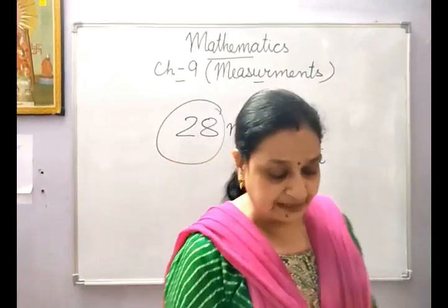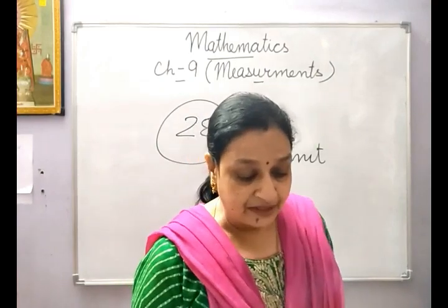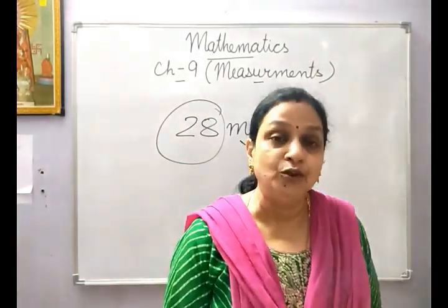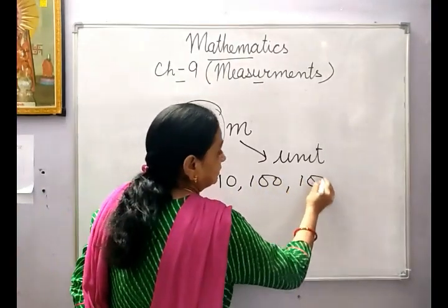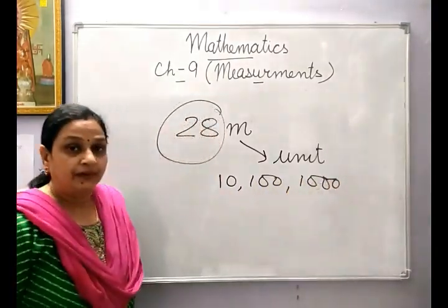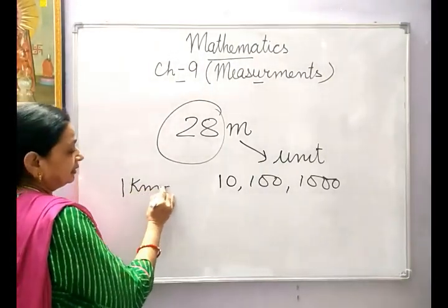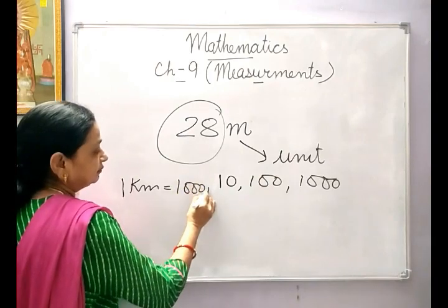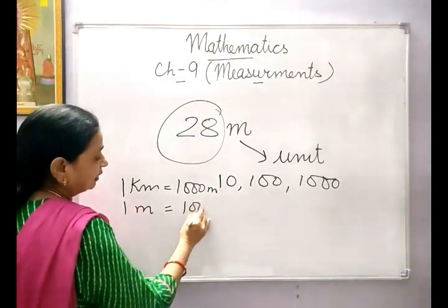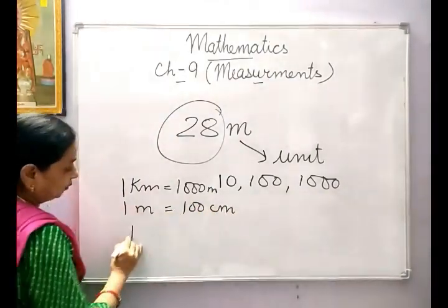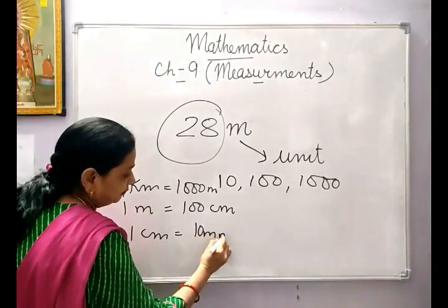The metric system is based on the decimal system. Metric measures are measured in units of 10, 100, and 1000. For example, 1 kilometre has 1000 metres. Similarly, 1 metre is equal to 100 centimetres, and 1 centimetre is equal to 10 millimetres.